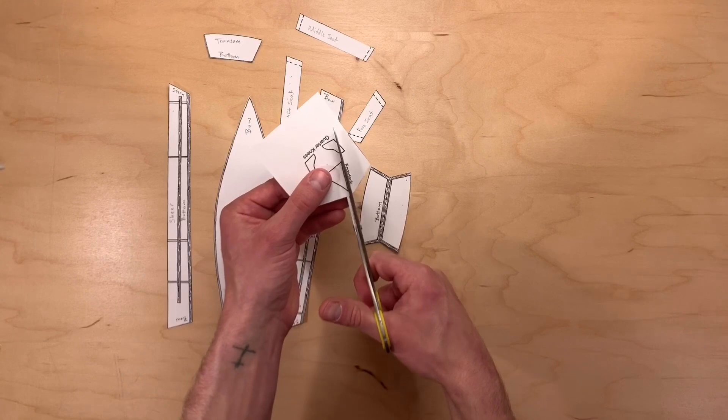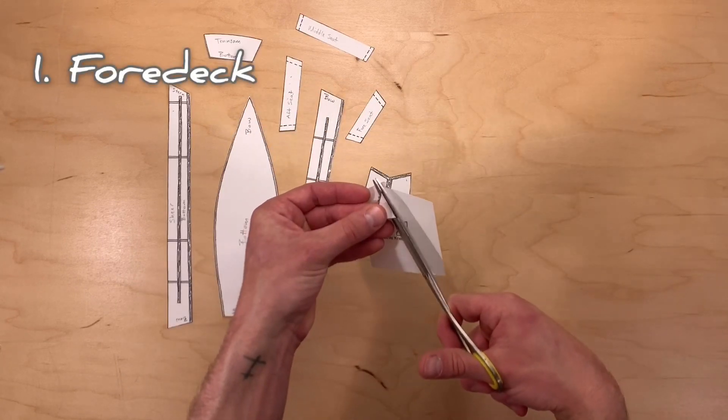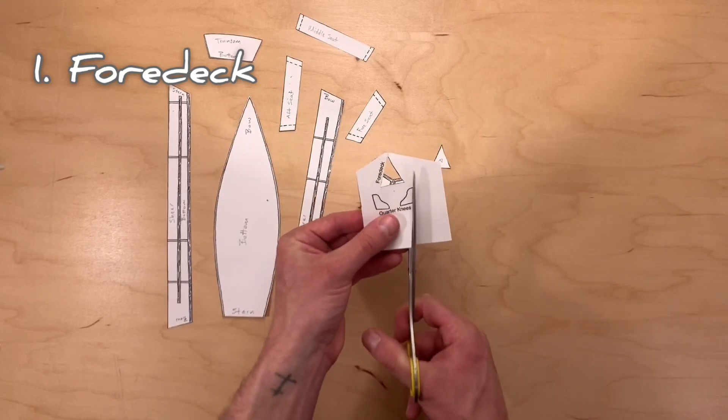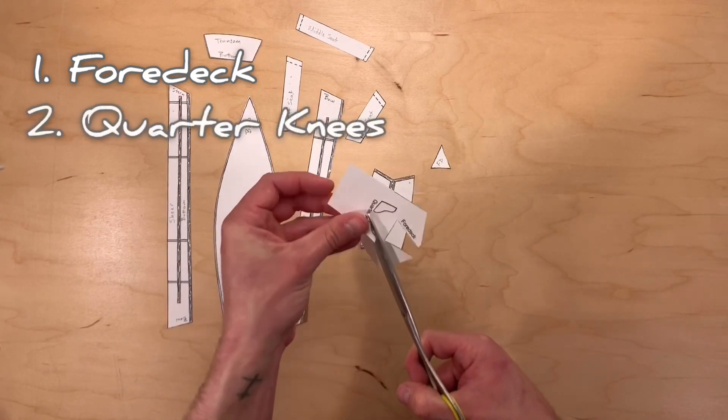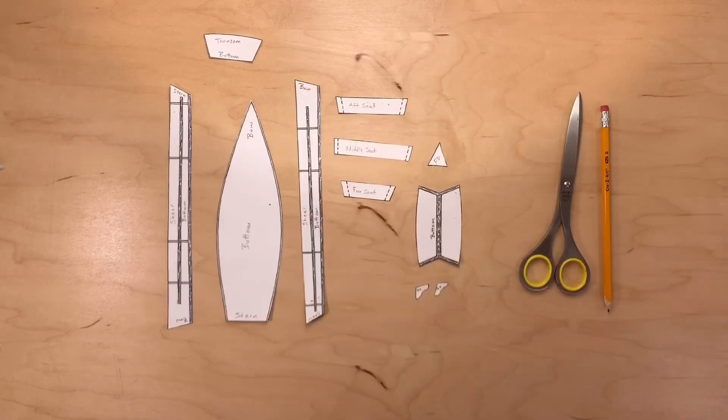We have a few other small pieces to cut out. First, we have the foredeck. The foredeck is a small triangular deck that goes in the front of the boat. Also, we have what are called the quarter knees. Quarter knees serve as a corner brace between a boat's side and the transom.